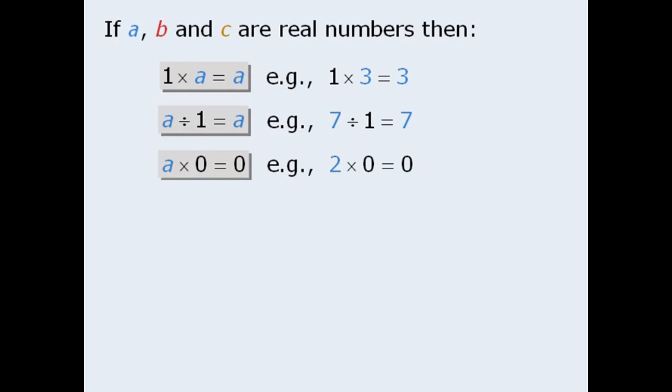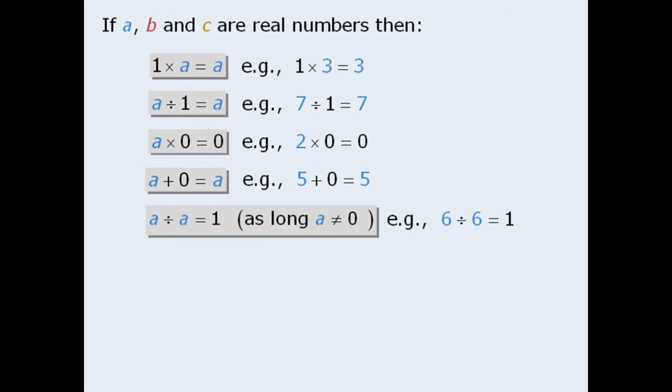Next, whenever we multiply a number by 0, the product is always 0. And, whenever we add 0 to a number, the sum is always that number. Finally, any non-zero number divided by itself is always equal to 1.